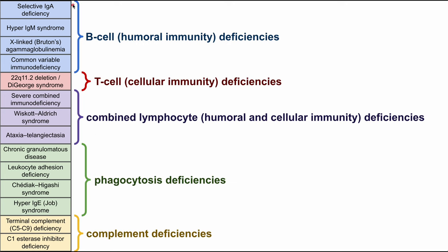I've listed all the disorders we'll talk about on the left here, and this is how I group them in my head. The ones in blue are B cell deficiencies — they result in problems with humoral immunity. The one in red is a T cell deficiency with a problem with cellular immunity. There are combined lymphocyte deficiencies, both humoral and impaired T cell. That's these three. You have phagocytosis deficiencies — those four in green — and complement deficiencies, the last two in yellow.